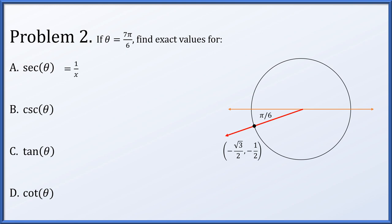The secant of theta is 1 over the x-coordinate. Referring to our x-coordinate of −√3/2 and reciprocating, we get −2/√3. If your instructor requires rationalized denominators, you'll need to simplify further. The cosecant is 1 over the y-coordinate, which is −2. The tangent is y/x; the negatives and the factor of 2 cancel, giving 1/√3. The cotangent is x divided by y, which resolves to simply √3.